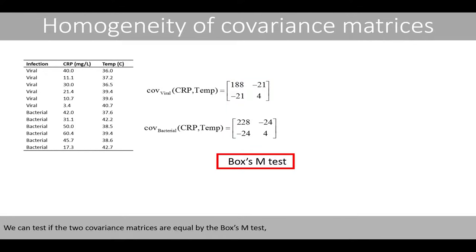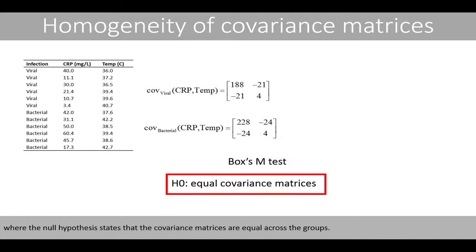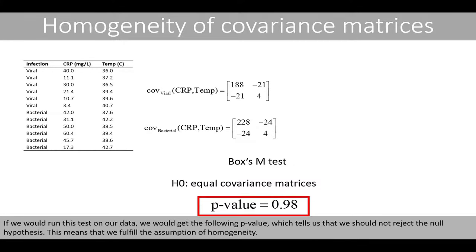We can test if the two covariance matrices are equal by using the Box's M test, where the null hypothesis states that the covariance matrices are equal across the groups. If we run this test on our data, we get a p-value that tells us we should not reject the null hypothesis. This means that we fulfill the assumption of homogeneity.